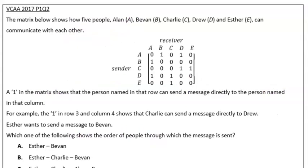Our second example here from 2017 is a multiple choice question. The matrix below shows how five people: Alan, Bevan, Charlie, Drew, and Esther can communicate with each other. Remember, we are reading in and up as we're reading our matrix here. Esther wants to send a message to Bevan. Which of the following shows the order of people through which this message is sent? If we look here, we can see there's very few people who can communicate with each other. If we look at Esther, Esther only has one person that she can communicate with, and that is Charlie.